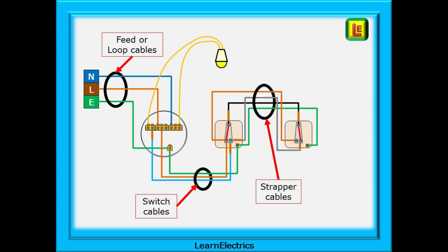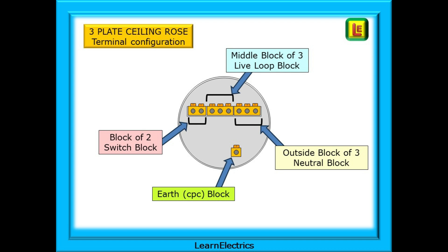Notice the brown sleeving on the conductors that might become energized to 230 volts at certain times. It's important to follow the standard convention for terminal configuration at the ceiling rose. Anyone following behind you will then know which wire is which. The ceiling rose has three brass blocks. One with two terminal holes and two with three holes. The block of two is always the switched line. In normal operation it will sometimes be at 230 volts and sometimes at zero volts depending on the switch positions, lights on or lights off. The middle block of three is always the live loop block. This block is permanently energized regardless of the switch settings. And the outside block of three is the neutral block. Finally there is an earth or CPC terminal.